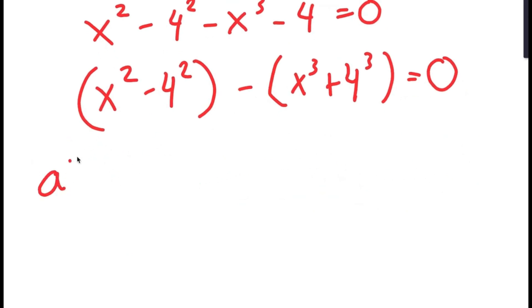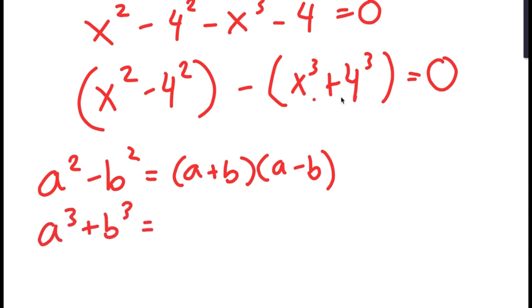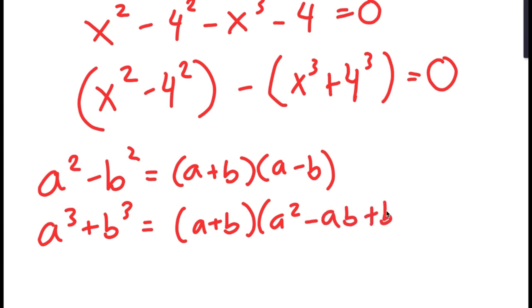If I have something in the form a squared minus b squared, this equals a plus b times a minus b. And if I have something in the form a cubed plus b cubed, this equals a plus b times a squared minus ab plus b squared.